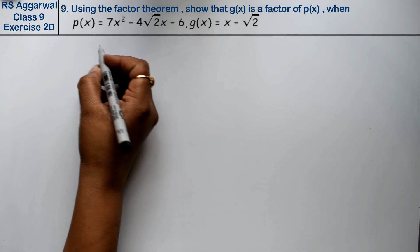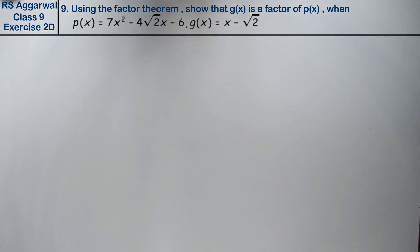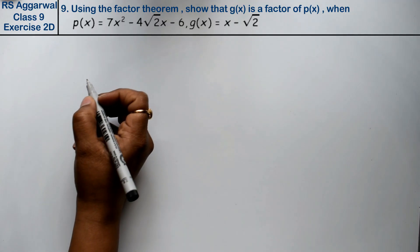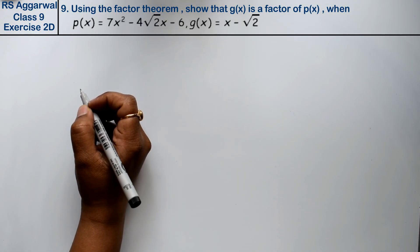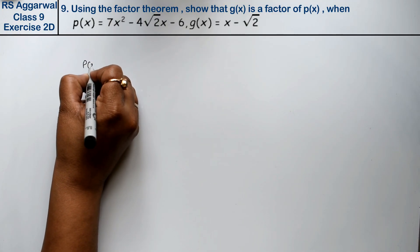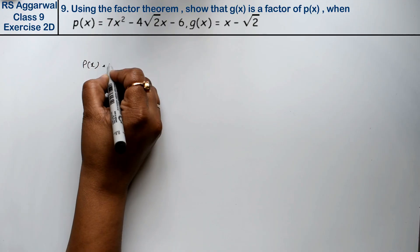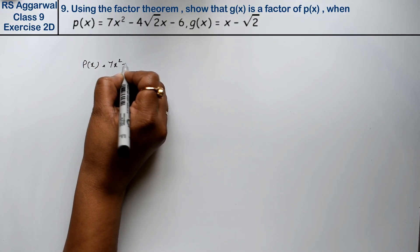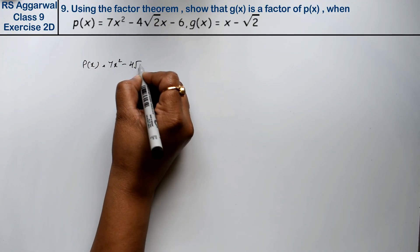Let's do question number 9 of exercise 2d. This is a polynomial question. Using the factor theorem, show that g(x) is a factor of p(x), where p(x) is given as 7x² - 4√2x - 6.